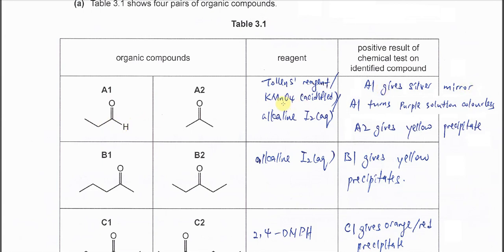Or we can use KMnO4 because it's purple color. You must put acidified KMnO4. Then A1, this aldehyde will turn purple solution colorless.